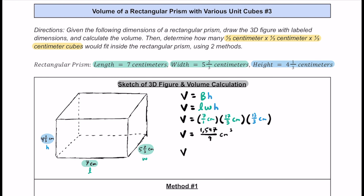While 1,547/9 is the volume of this prism, we can also convert it to a mixed number using long division. Nine fits into 1,547 a total of 171 times with 8 left over. So as a mixed number, the volume is 171 and eight-ninths cubic centimeters.